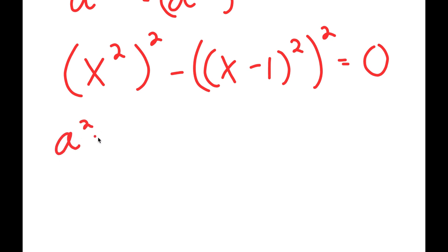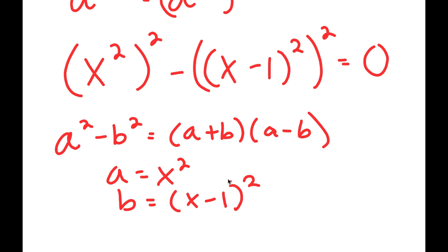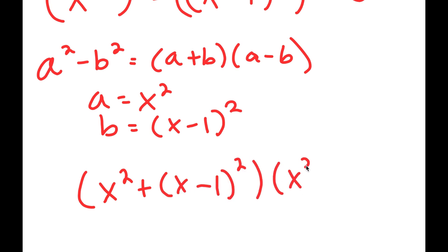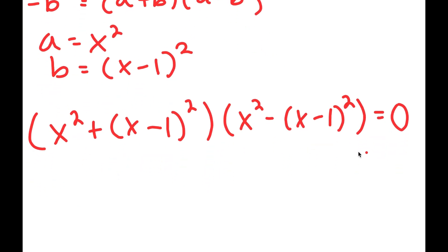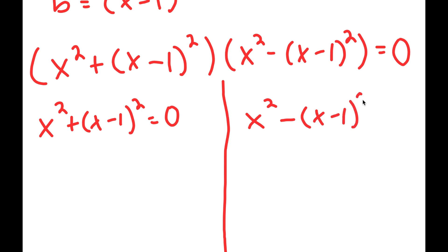Now, if I have something in the form a squared minus b squared, this equals a plus b times a minus b. So in this case, a is equal to x squared and b is equal to x minus 1 squared. So now I get x squared plus x minus 1 squared times x squared minus x minus 1 squared is equal to 0. This gives me two equations: x squared plus x minus 1 squared equals 0, and x squared minus x minus 1 squared equals 0.